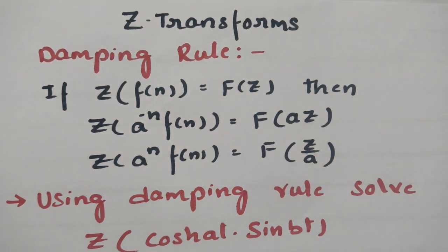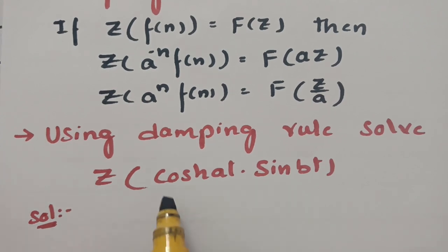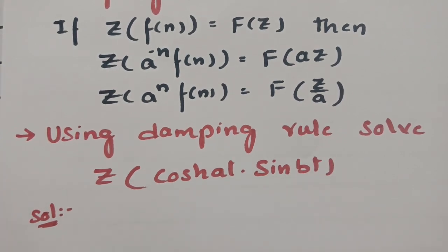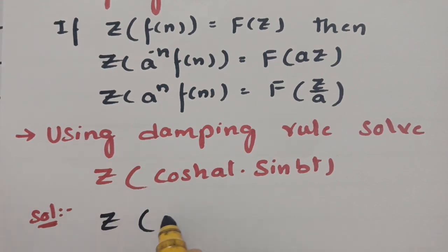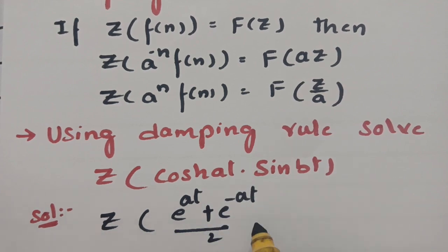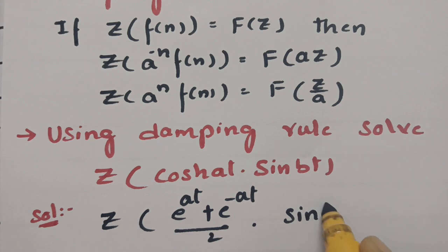Using this damping rule I am going to solve the problem: Z transform of cosh(at) into sin(bt). As you know, cosh(at) can be written as e power at plus e power minus at, divided by 2, into sin(bt).